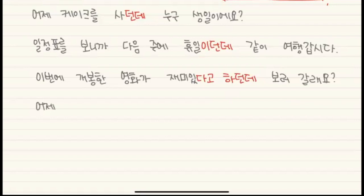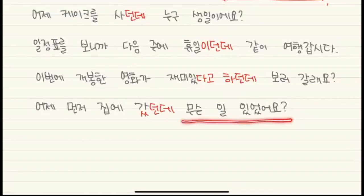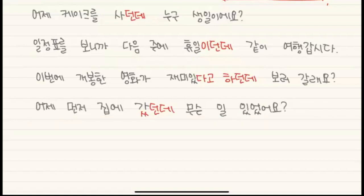어제 먼저 집에 갔던데 무슨 일 있었어요? — Was there something that happened? I saw you went home early. I didn't see you leave directly, but I saw your place was empty — I saw the empty spot without you. After that realization, you can say it in past tense with 던데.